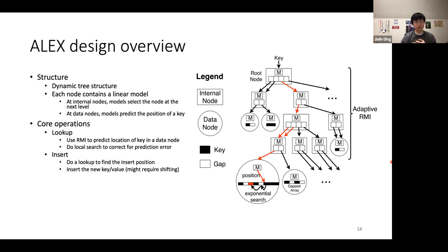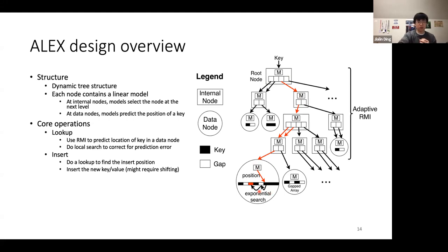We call this overall structure an Adaptive RMI — similar to the original RMI with a hierarchy of lightweight linear regression models, but adaptive in that the structure is dynamic and nodes can split and merge. ALEX performs a lookup by using the adaptive RMI to predict a key's location in a data node: starting at the root, feeding the key into the model, selecting the next level's node recursively until reaching a data node, then using the data node's model to predict the key's position within the sorted data array. Since the model is not 100% accurate, we do local search using exponential search to find the true position.